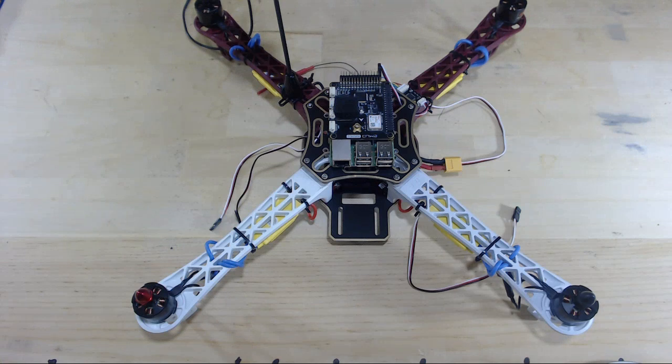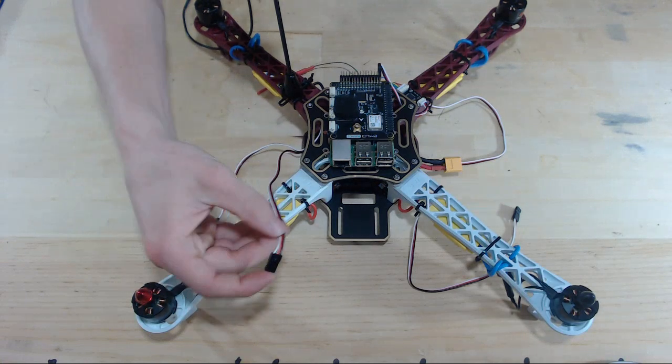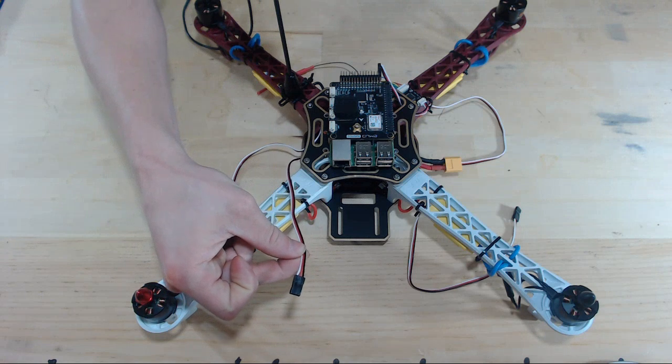Okay, in this video, we will be attaching the signal line from our ESCs into our Navio shield.